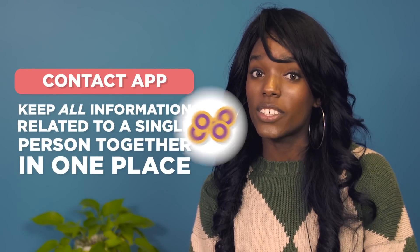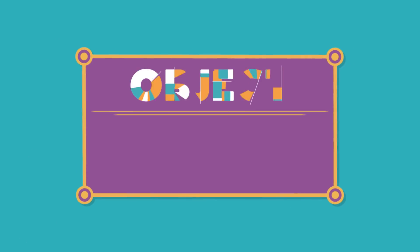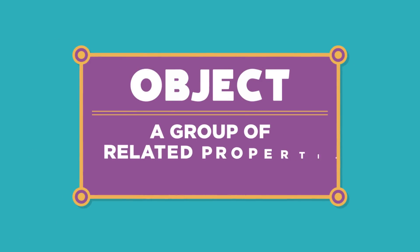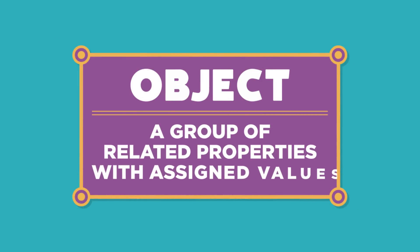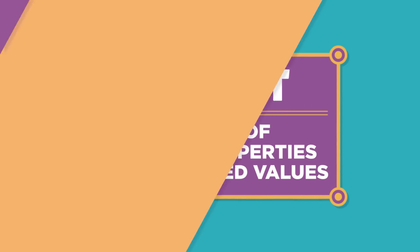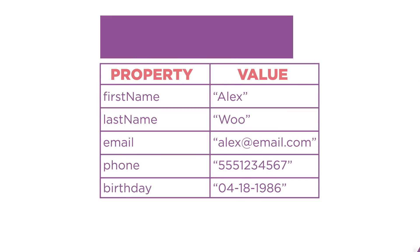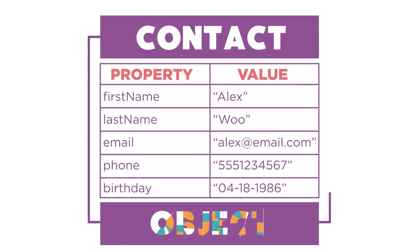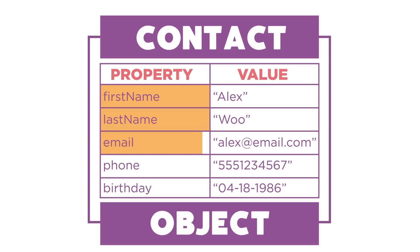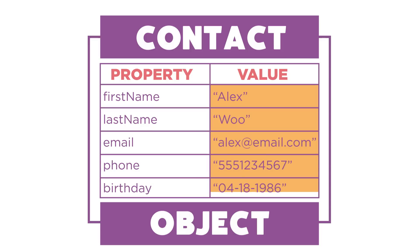JavaScript can do this by using an object — a group of related properties with assigned values. In this example, each contact is an object with related properties like first name, last name, email, phone number, and birthday. You can see here that each property has a corresponding value.